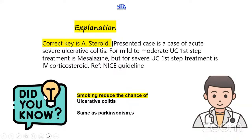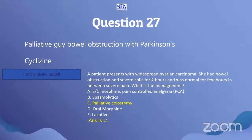An interesting fact: smoking reduces the chance of ulcerative colitis, same as Parkinsonism. The next question is about a palliative patient with bowel obstruction - a patient with widespread ovarian carcinoma in palliative management. She has bowel obstruction with severe colic for two hours, normal for three hours, then severe pain in between. What is the management?